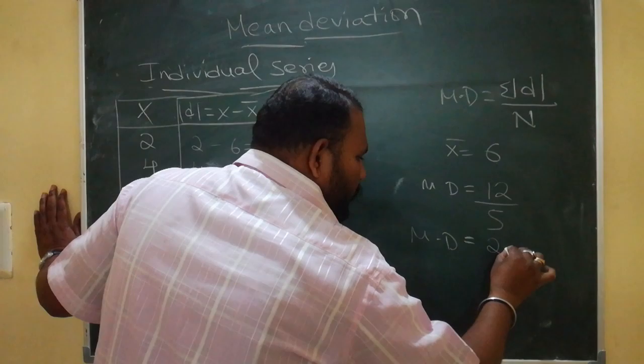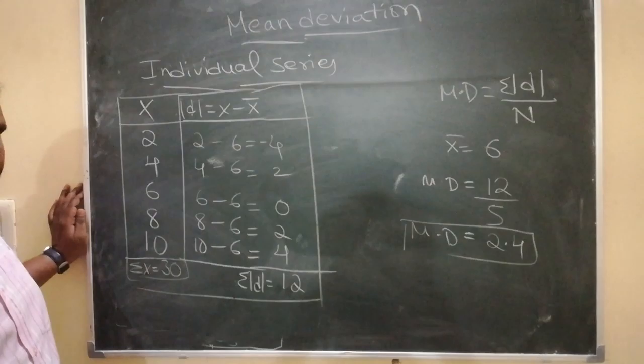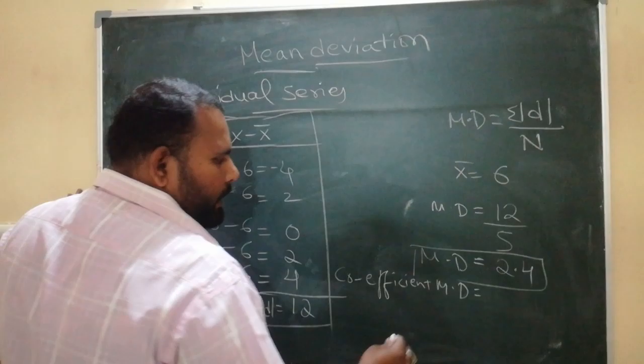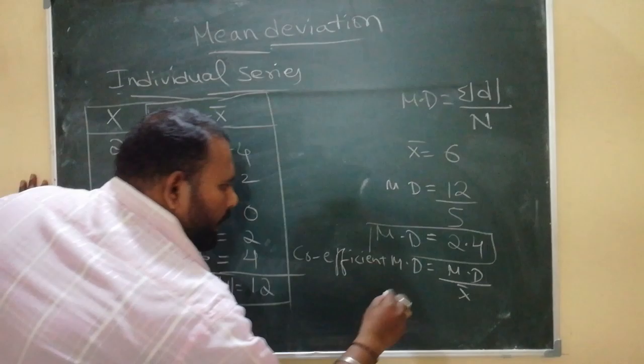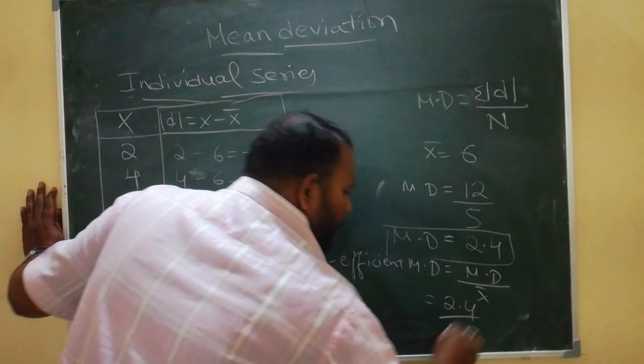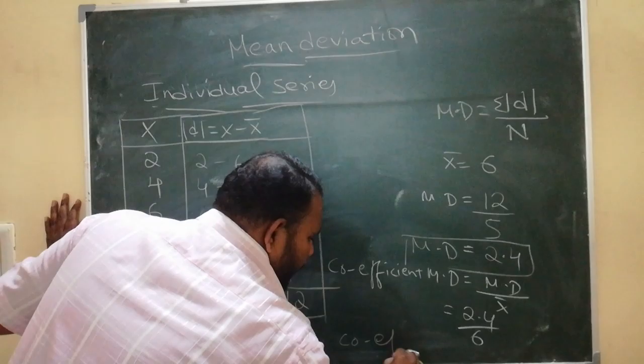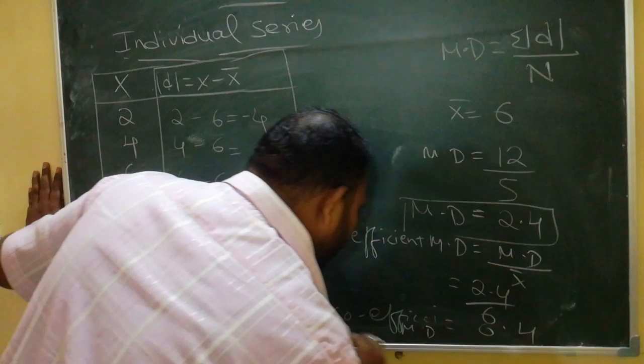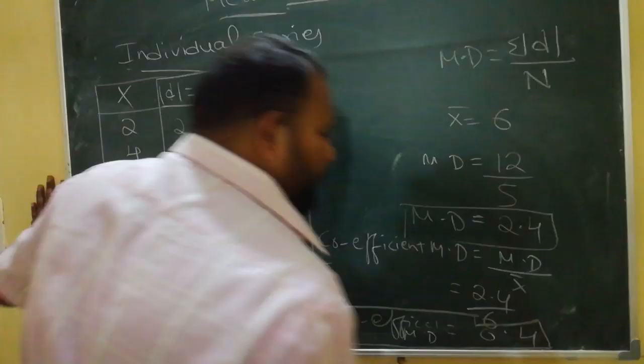After finding mean deviation, suppose if they ask you to find the coefficient of mean deviation, the formula is nothing but mean deviation divided by x-bar. So if we calculate now: coefficient of mean deviation equals 2.4 divided by x-bar, which is 6, and finally we get coefficient of mean deviation equals 0.4.